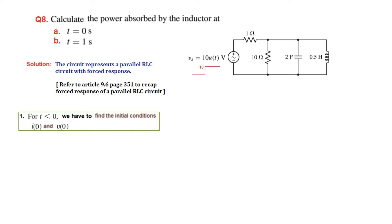Now I follow a step-by-step approach for solving the parallel RLC circuit. The first step is: for t less than 0, we have to find the initial conditions, that is i(0) and v(0). Remember, whenever we say i(0) it means i_L(0), and whenever we say v(0) it means v_C(0) — the current through the inductor and the voltage across the capacitor.